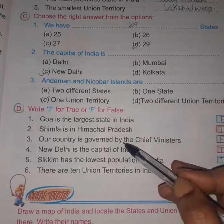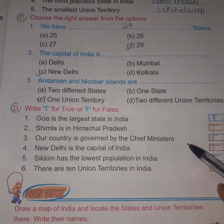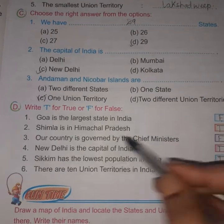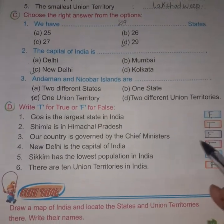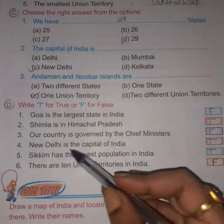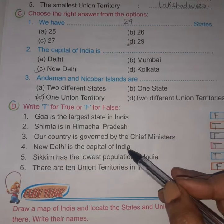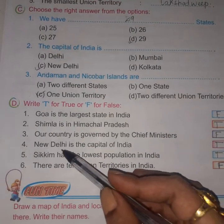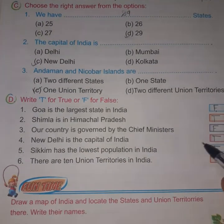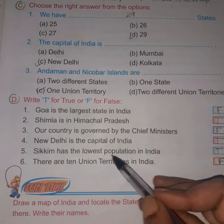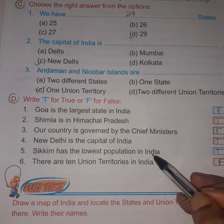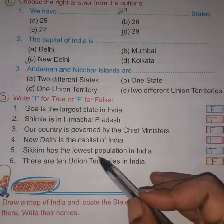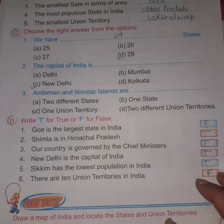Our country is governed by the Chief Minister? No — that is false. The state is governed by the Chief Minister, not the country. New Delhi is the capital of India — true. Sikkim has the lowest population in India — that is true.